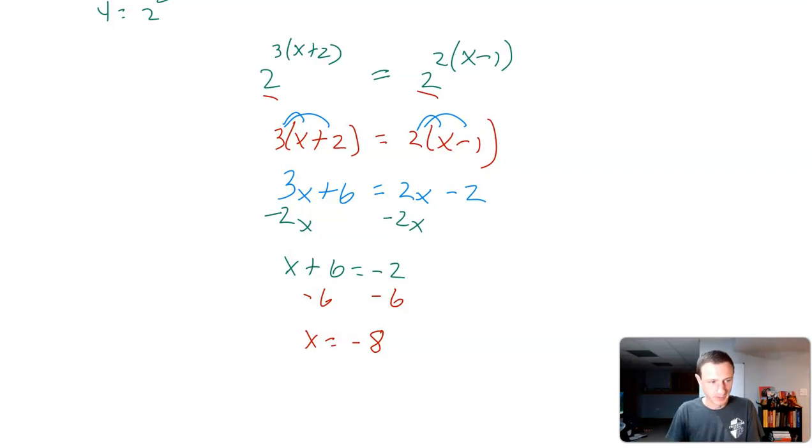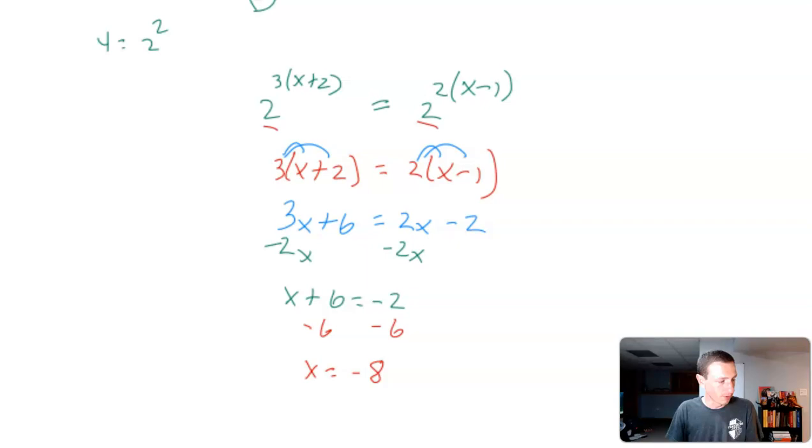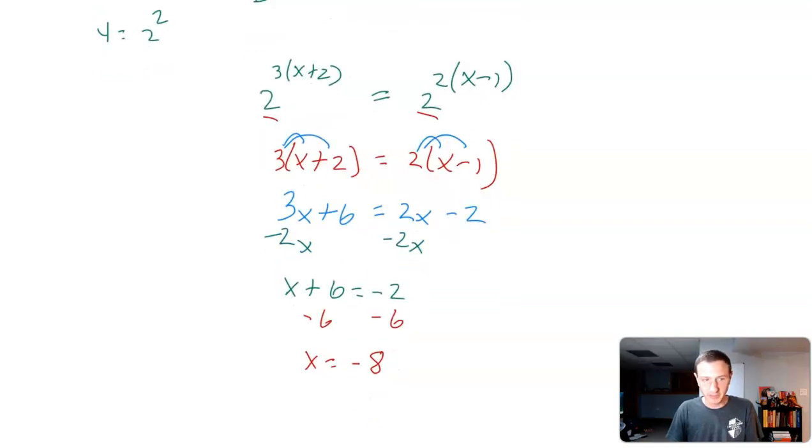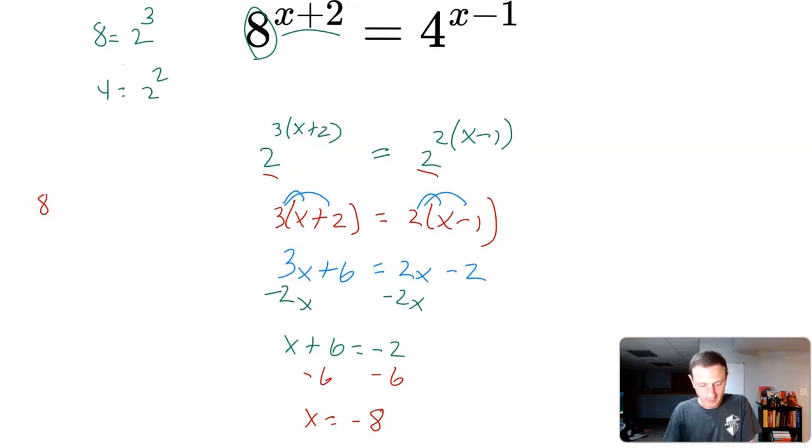And there it is. We get x equal to negative 8. Wouldn't be the worst thing in the world to just maybe take a second and check your answer. I don't think it would hurt anything. So let's see. This is going to be 8 to the negative 8 plus 2 equal to 4 to the negative 8 minus 1.